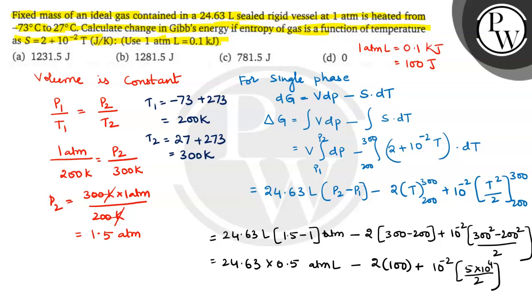So now I am multiplying this value. 24.63 into 0.5 into 100. Now this total becomes joules. Minus this 2 into 100 plus this 10 power minus 2, 5 into 10 power, this is all the things. If you solve, you will get 4.5 into 10 power 2, nothing but 450. So this on solving, you will get 781.5 joules.